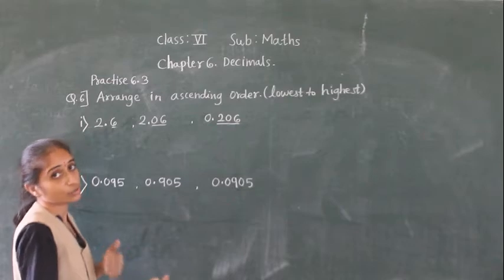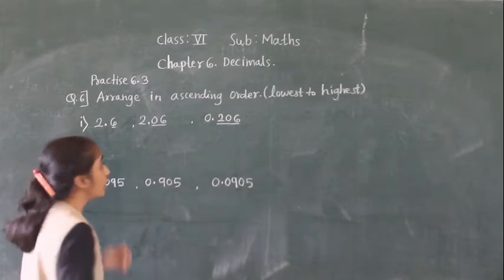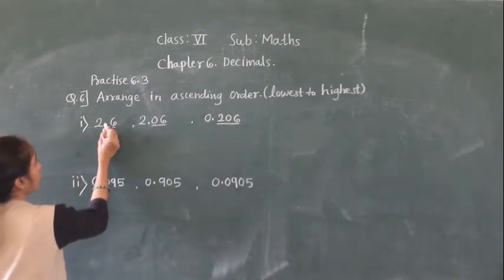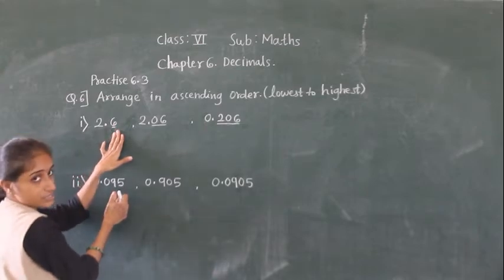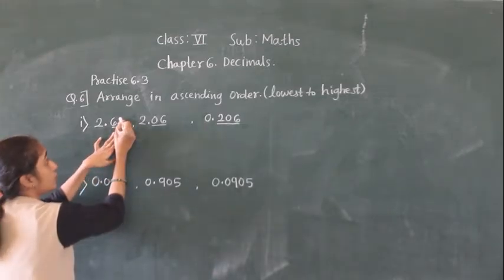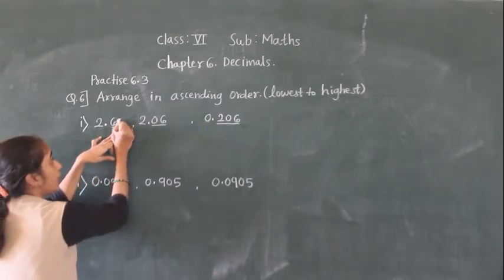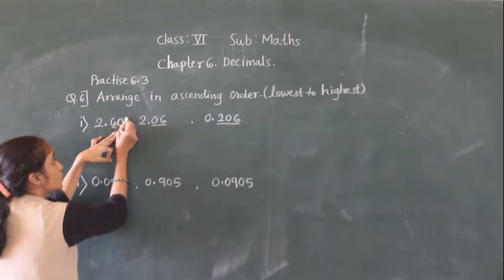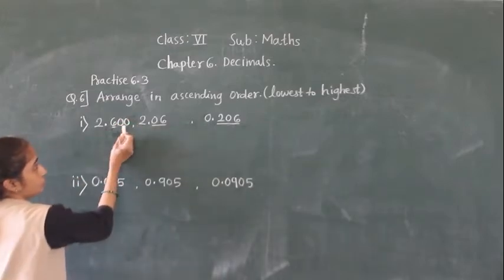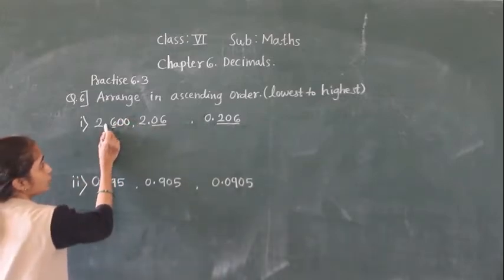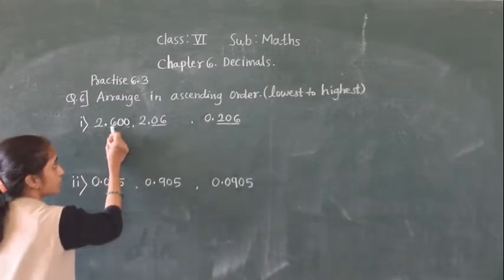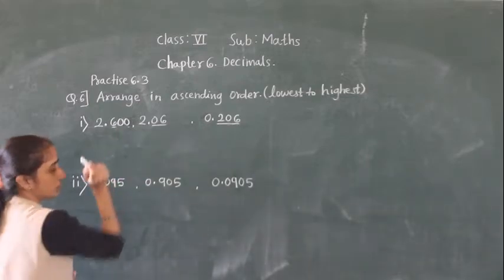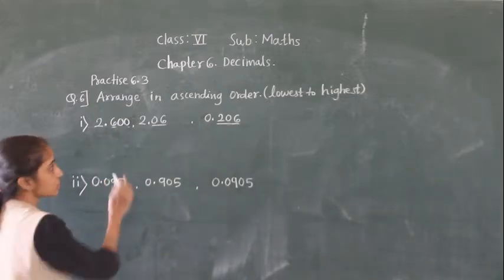This makes it easy to compare the numbers. So for 2.6, we have to make three digits after the decimal point. We add two zeros, so we get 2.600. After the decimal point we now have three digits: one, two, three.